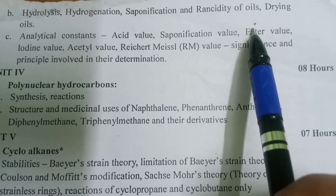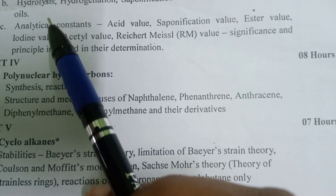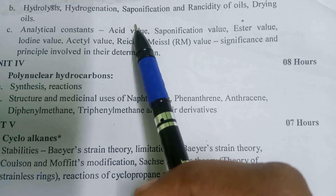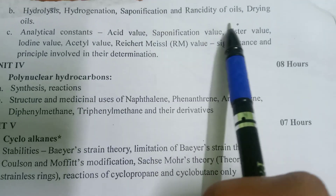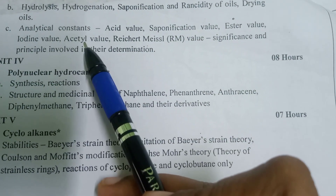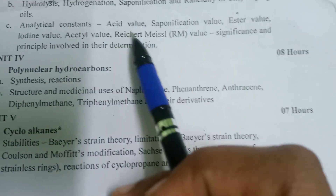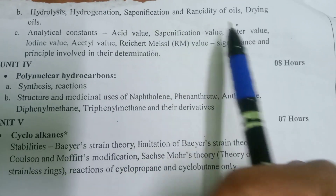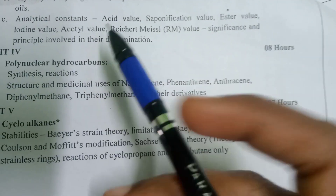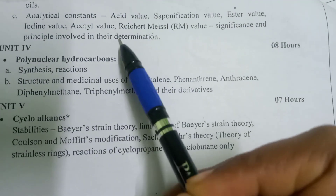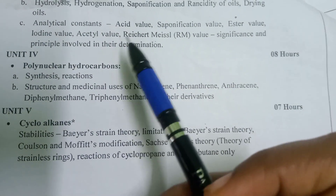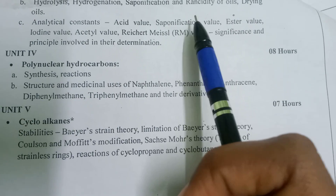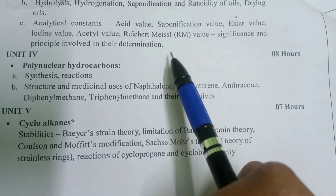Fats and oils reactions include hydrolysis, hydrogenation, saponification, rancification of oil, and drying oils. In hydrolysis, water is removed and water is added. In saponification, soap is produced. Rancification of oil and drying of oils are also covered. These are the analytical constants — the acid value is very easy. You can revise these values. These are significant determinations — the saponification value is a key number.